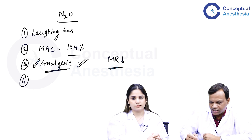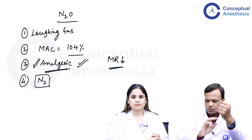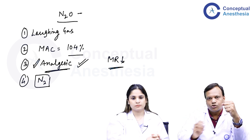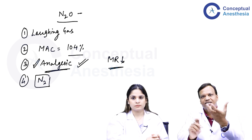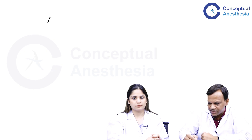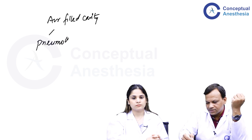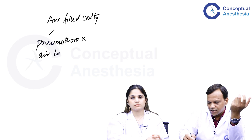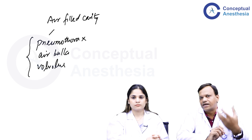An important property to remember about nitrous oxide: because nitrogen is present in the body and nitrous oxide is exchangeable with it, nitrous oxide can replace nitrogen in air-filled spaces. Nitrous oxide has low blood gas partition coefficient, so it can enter air-filled cavities quickly compared to the speed with which nitrogen escapes, resulting in increased pressure in these areas. Wherever there are air-filled cavities in the body — such as in pneumothorax, air bullae, or obstructed intestinal loops in volvulus — nitrous oxide may accumulate and increase pressure, causing serious problems.